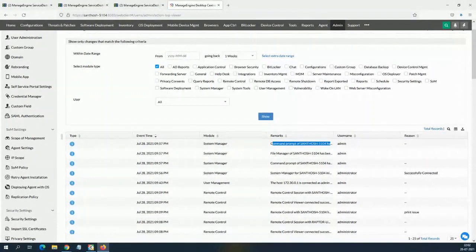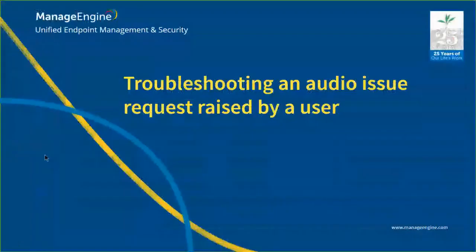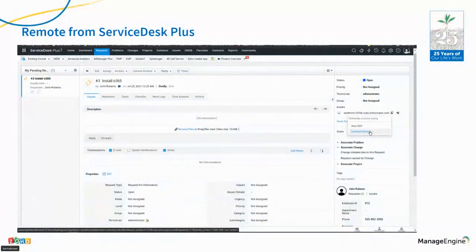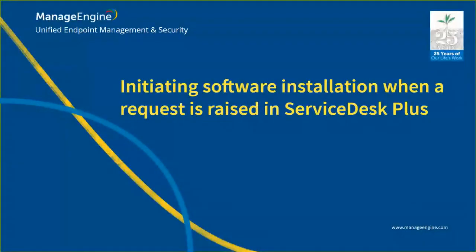The second scenario is installing software from an incident when it's raised in a ticket. Imagine somebody would like to get Office 365 — that's a commercial application — or Chrome, which everyone wants installed beyond the default browser. Whenever they raise a request, how do I approach it? I go to my Service Desk Plus instance, go to Requests, and I have a sample request: 'Please install the requested software in my machine.'